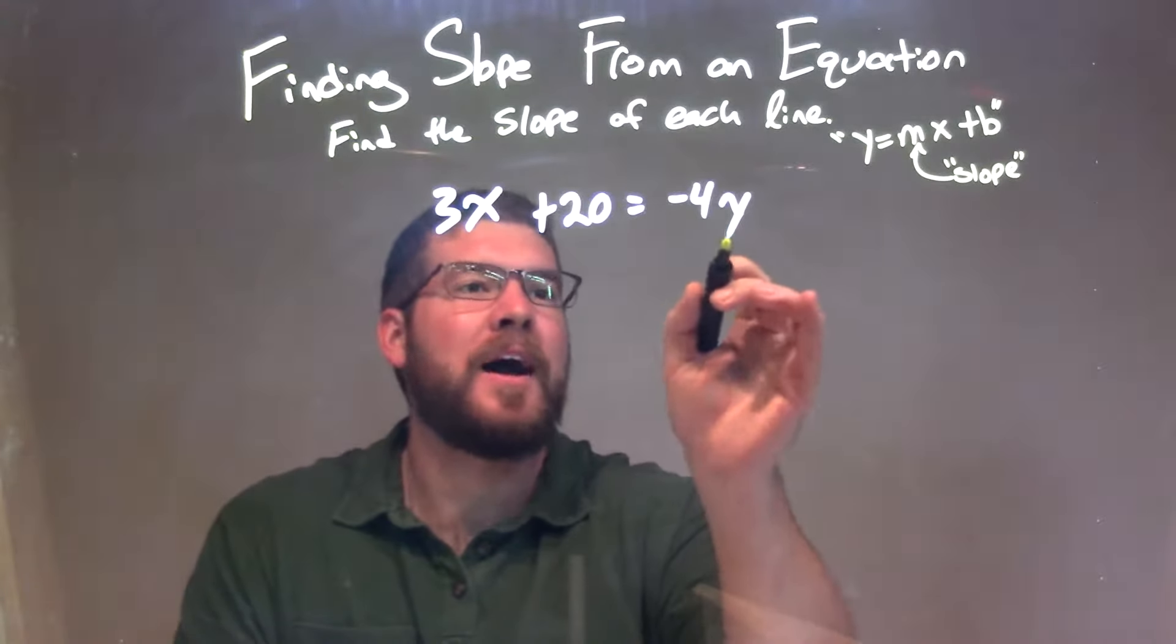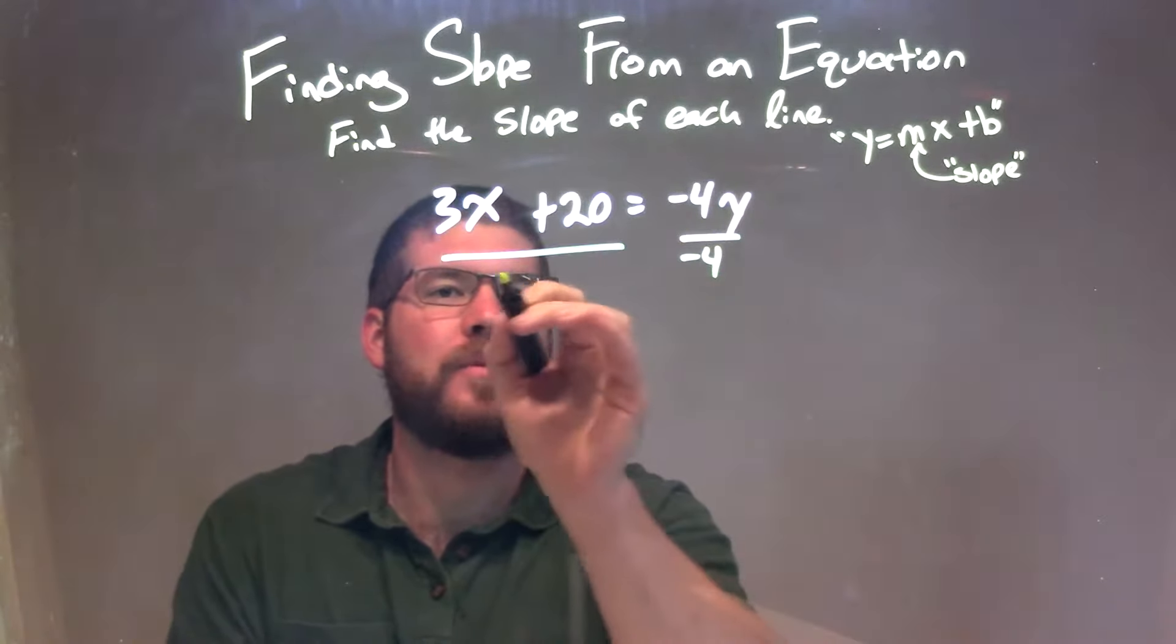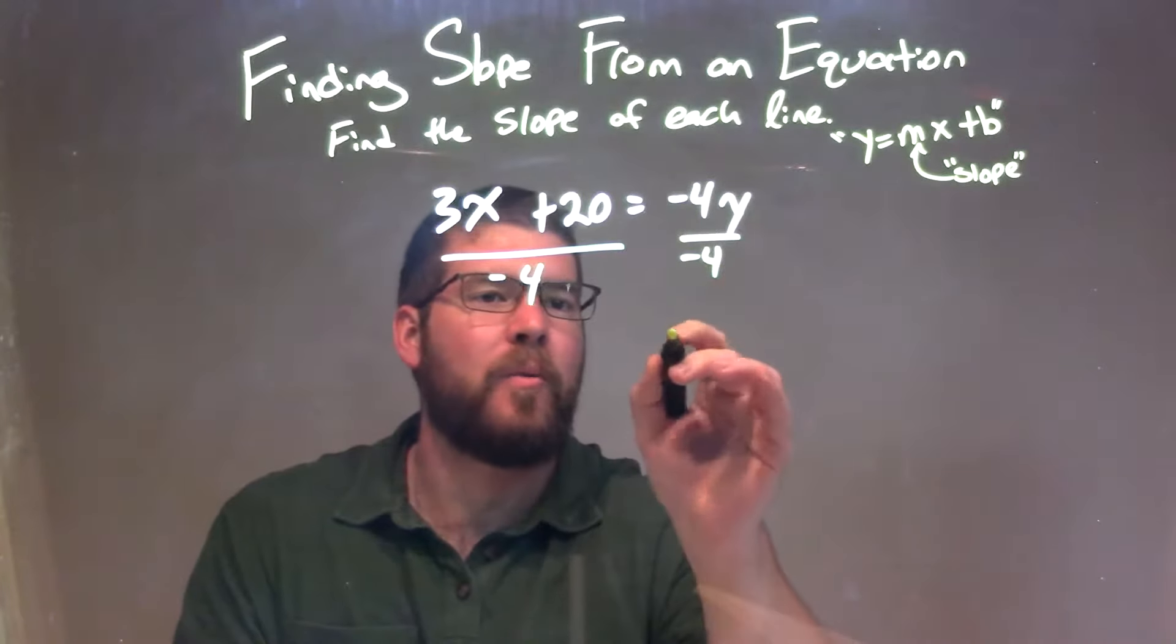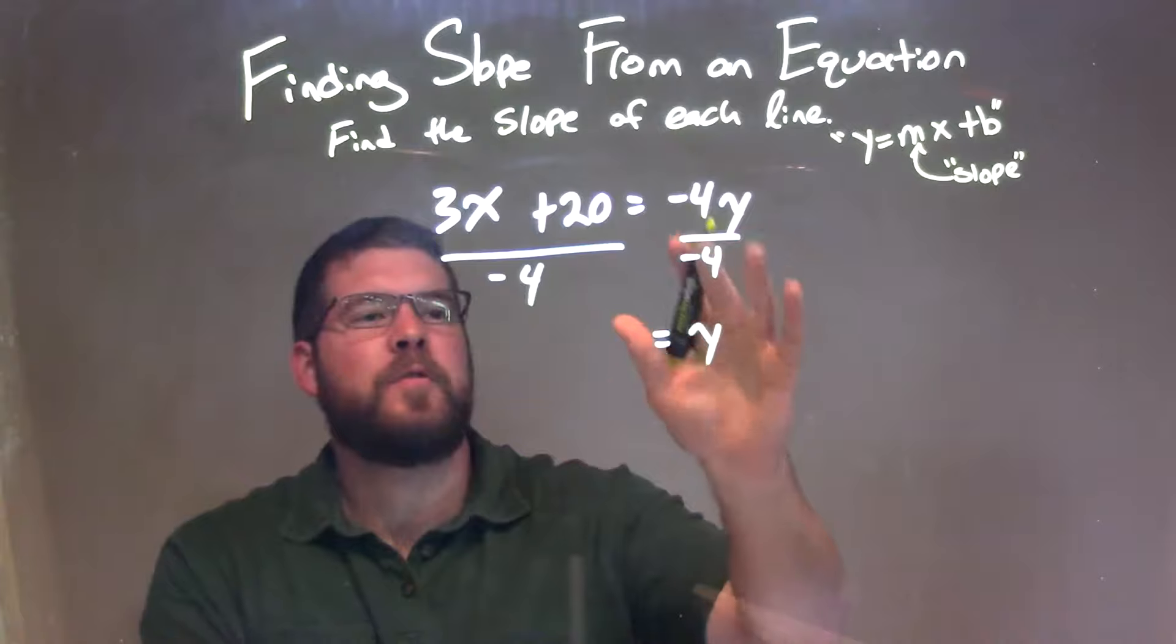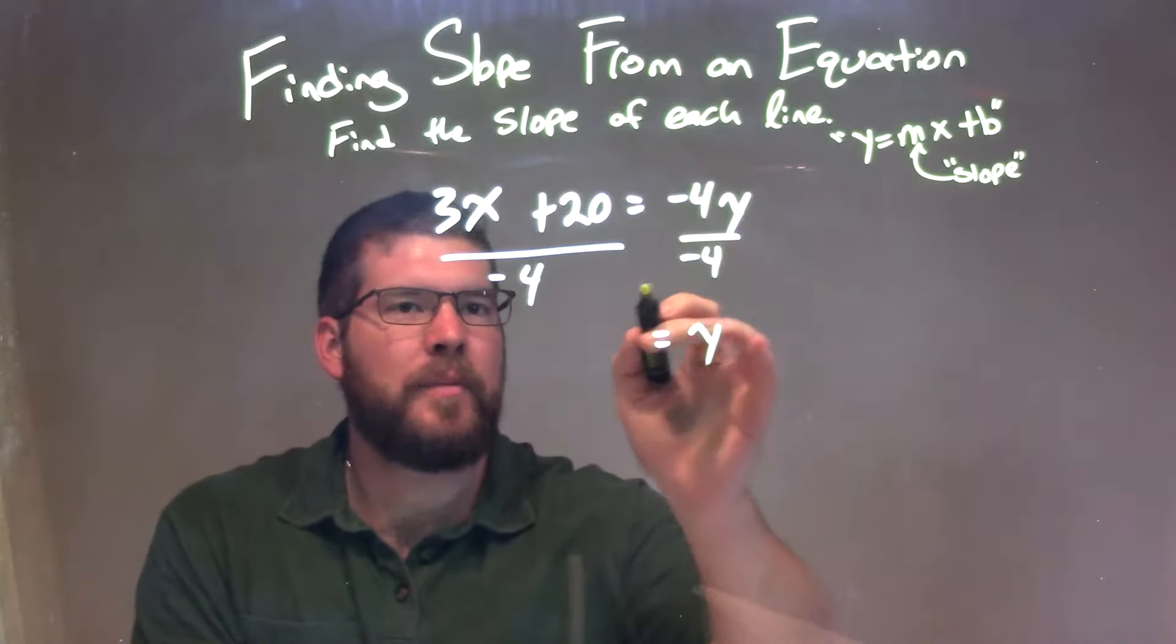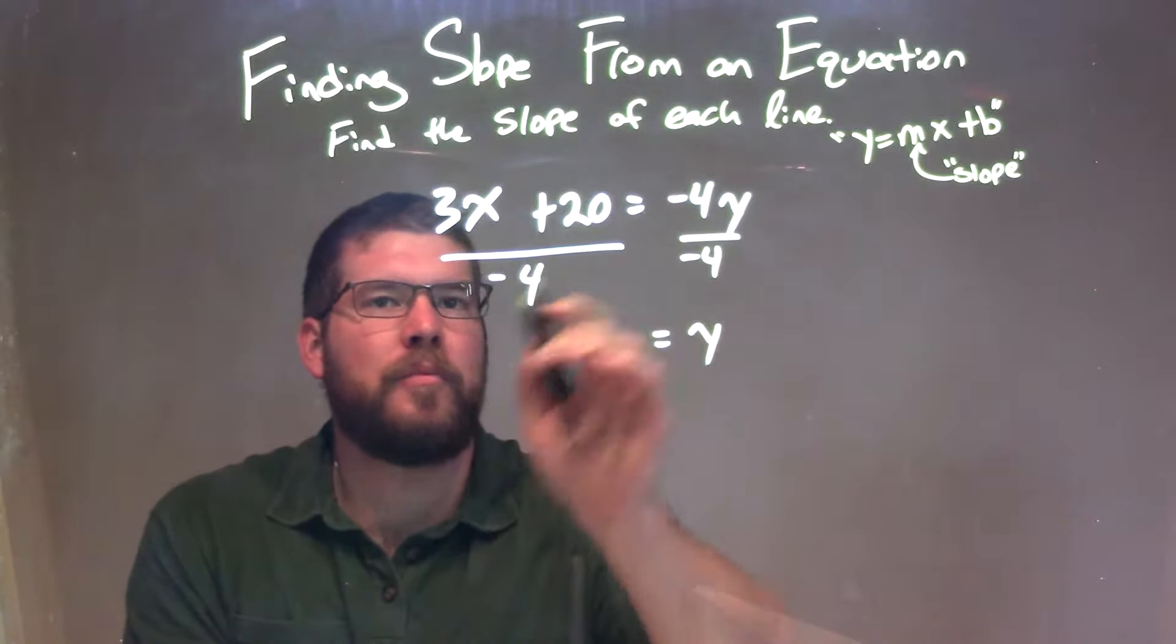If I divide by negative 4 to both sides, y is isolated on the right. We divide by negative 4 to both sides, and you need to distribute to both parts here.